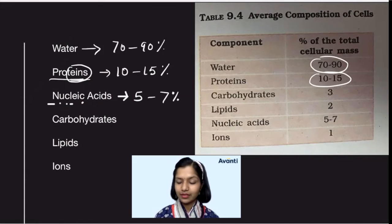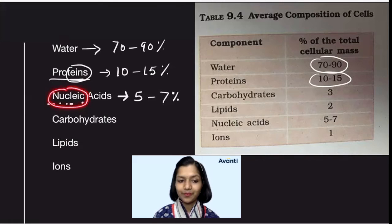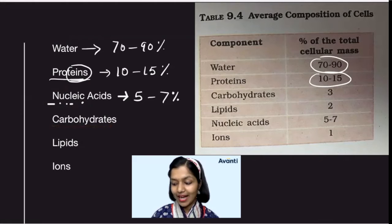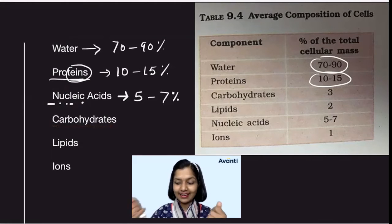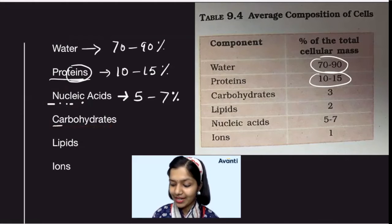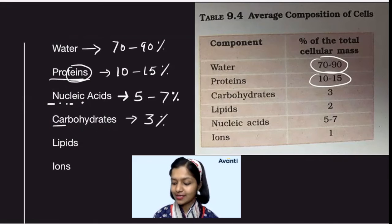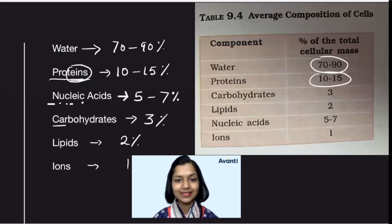Now, take this word 'nucleic' — it is ending with the letter C. C for carbohydrates. Now carbohydrates has 'car' in it. Car has how many letters? 3 letters. So what is the percentage of carbohydrates in your cell? 3%. Now for the rest, write it in decreasing order: after 3 comes 2, after 2 comes 1. Simple.